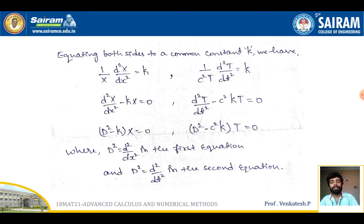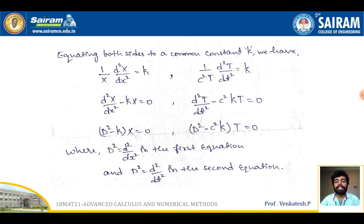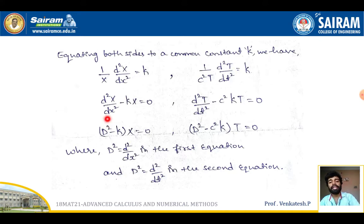Simplifying further, I get d²X/dx² − kX = 0 and d²T/dt² − c²kT = 0. In ODE, by replacing D = d/dx and D = d/dt respectively, these become (D² − k)X = 0 and (D² − c²k)T = 0. Now we have to frame the auxiliary equation for each and find the solution. There will be three different cases depending on the value of k.